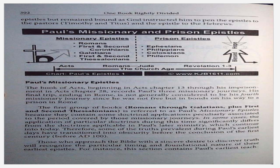His final trip ending in Rome is not generally considered to be his fourth missionary journey since he was not free, but in bonds on his way to a prison in Rome. The first group of books — Romans through Galatians plus 1st and 2nd Thessalonians — is referred to as Paul's missionary epistles because they contain some doctrinal applications peculiarly associated to the period covered by those missionary journeys. In some cases, the application of particular doctrines during this time significantly differs from the doctrines applicable in Paul's later ministry. Therefore, some of the truths prevalent during Paul's earliest days have transitioned into obscurity before the conclusion of the first century, before A.D. 100.